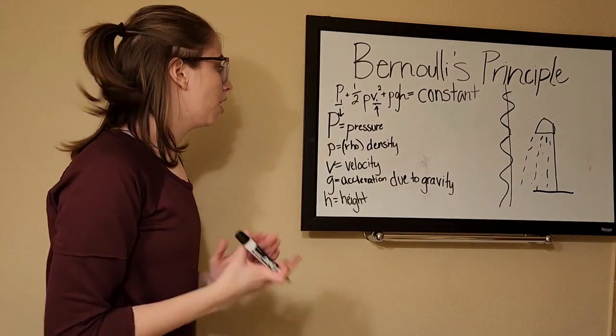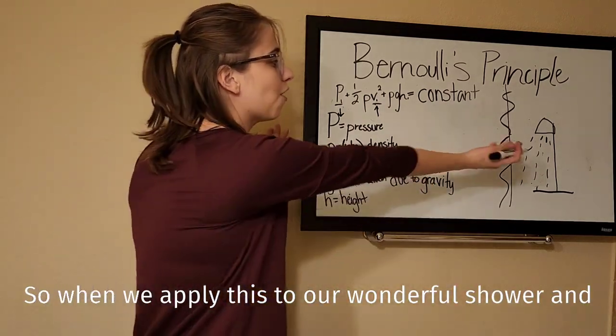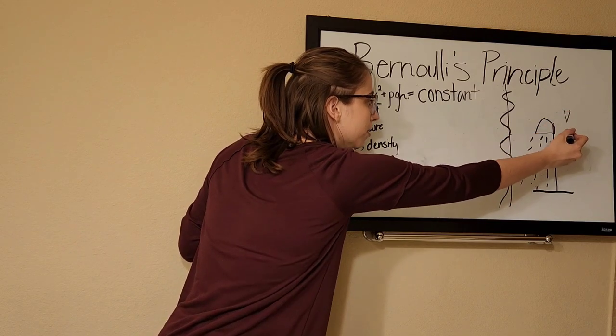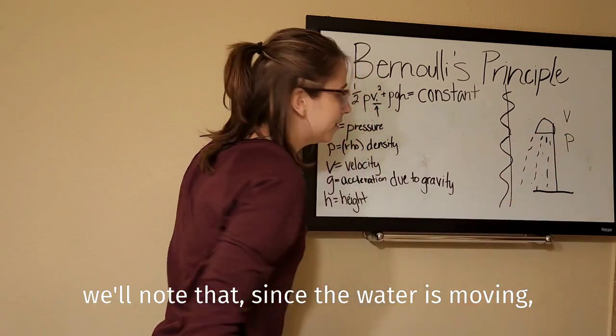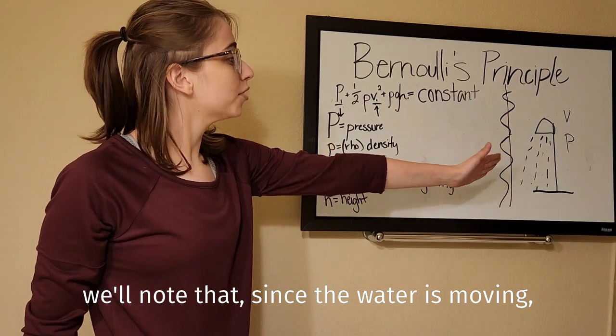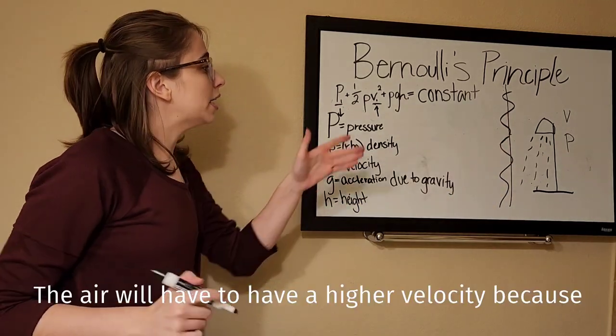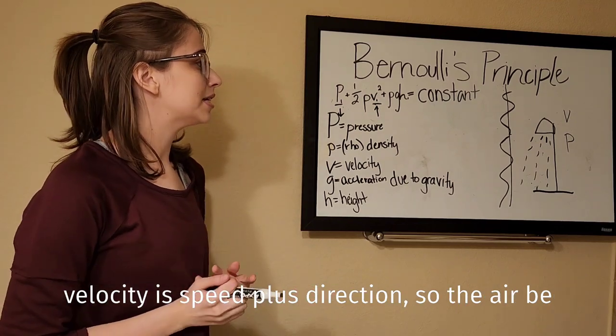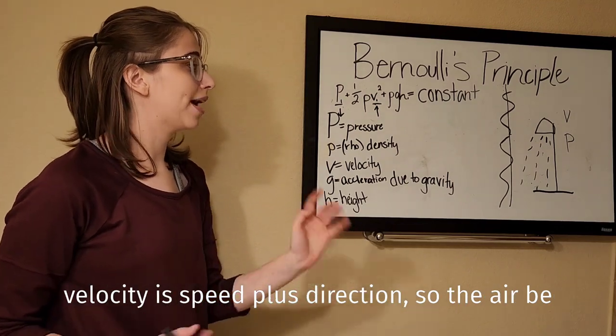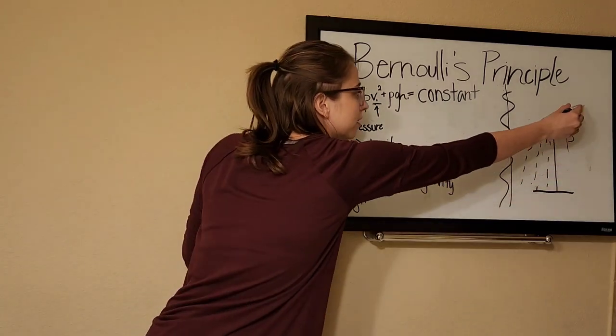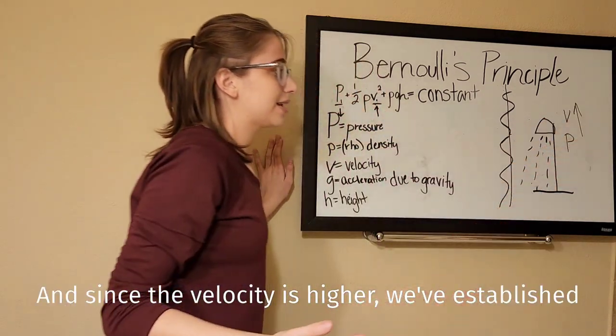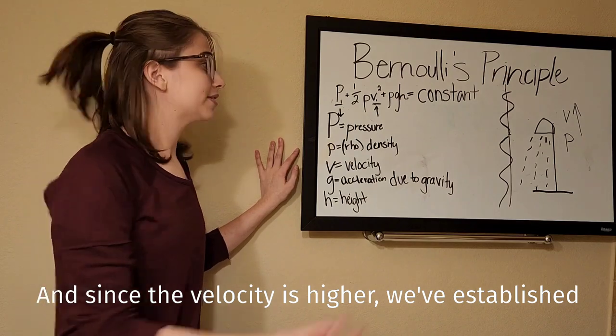So when we apply this to our wonderful shower and shower curtain here, we'll note that since the water is moving, the air will have to have a higher velocity because velocity is speed plus direction. So the air will be moving at a higher speed, and since the velocity is higher, we've established that the pressure must be lower.